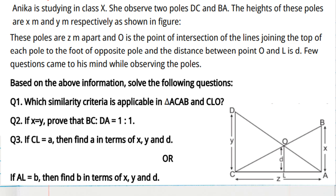Based on this information, we have to solve the following questions. Question 1: which similarity criteria is applicable in triangle CAB and triangle CLO? Triangle CAB is the large yellow triangle we can see. CLO is the small triangle we can see. In these two triangles, we can observe that one angle will be common — that is angle C.